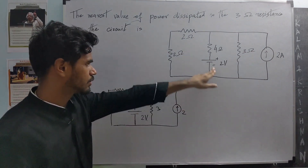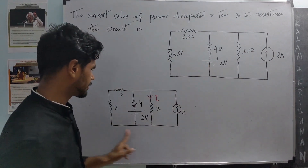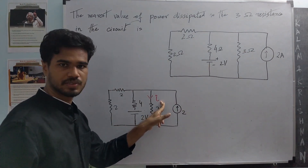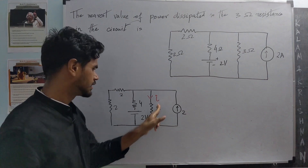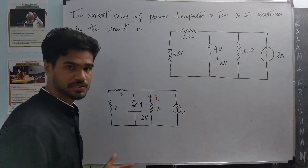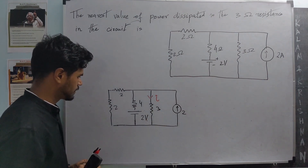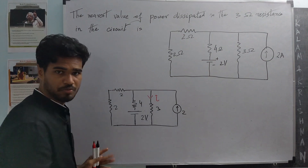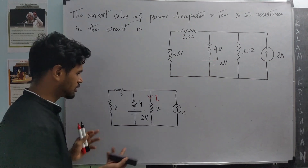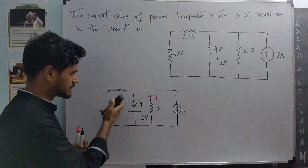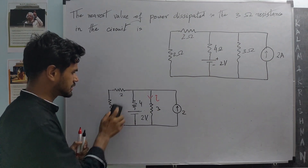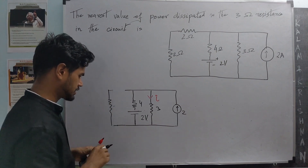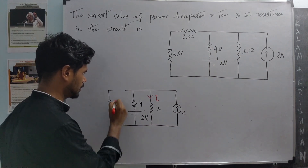We have redrawn the same circuit and essentially what we want is the current in the 3 ohm resistance, using which we can find the power. I am going to make a series of modifications. The first modification is to replace these two resistances with a 4 ohm resistance.